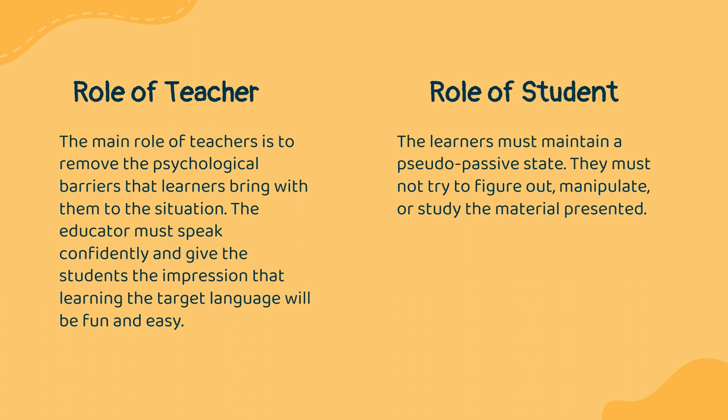The learners must maintain a pseudo-passive state. They must not try to figure out, manipulate, or study the material presented. Therefore, they must have faith in the system and accept that they are in a childlike situation where they follow the teacher or parent. Also, they must not be critical but should simply absorb what is presented. Students should also anticipate their own infantilization, acknowledging that the teacher has absolute authority, and should give in to the activities and techniques designed for them in order to regain the self-confidence, spontaneity, and receptivity of a child.